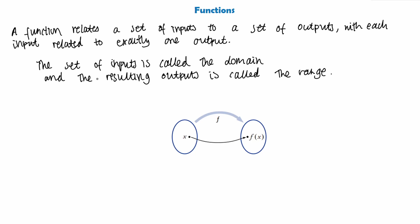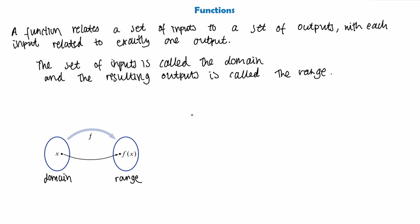We call the set of inputs the domain — everything within the first circle is the domain — and everything in the second circle is the range, which is the set of resulting outputs when we plug in a value x. A function is usually denoted by a lowercase letter, for example f, g, or sometimes h, and we use these letters to define a formula. They usually come in the form f of x, but you might also see f of y, meaning the function is expressed in terms of that letter. Examples include x plus 1, or y squared plus 3y minus 2.